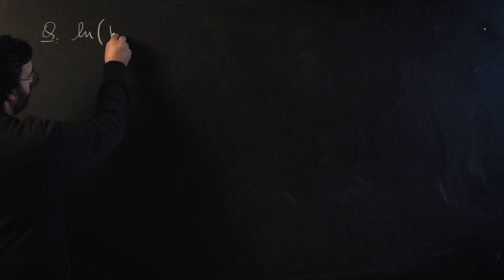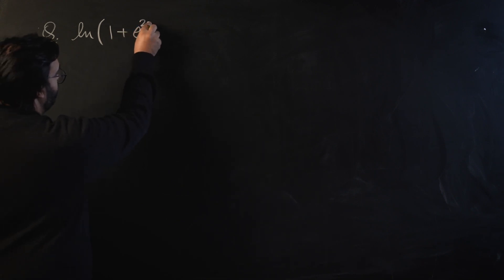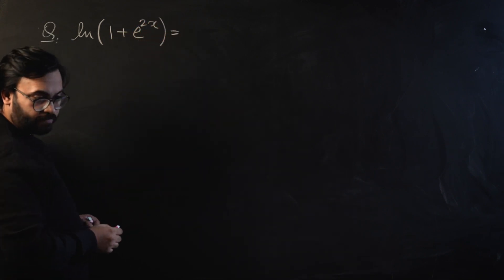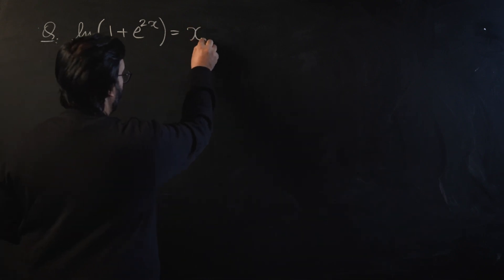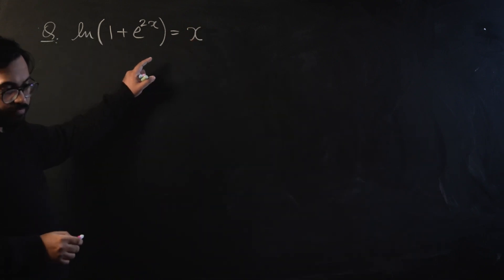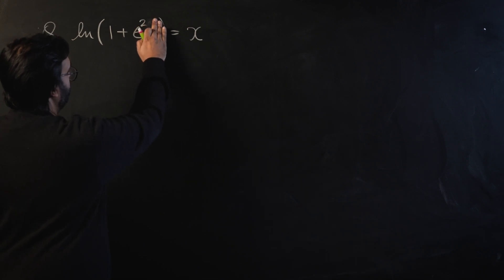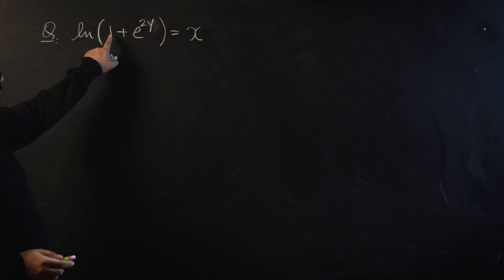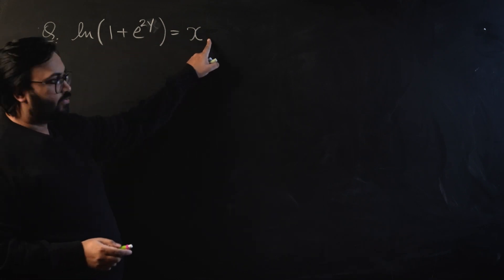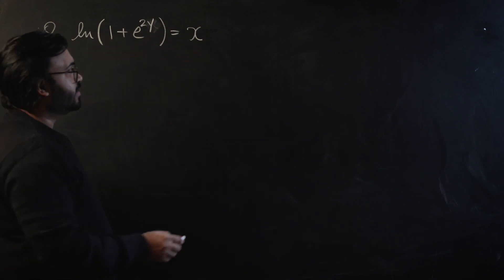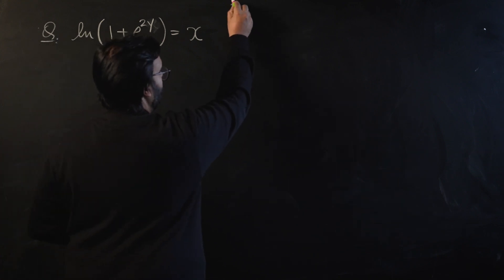Let's start with that. I'll show you what the problem was. The question is: natural log of 1 plus e raised to the power 2y is equal to x, and the requirement is that you have to express y in terms of x.